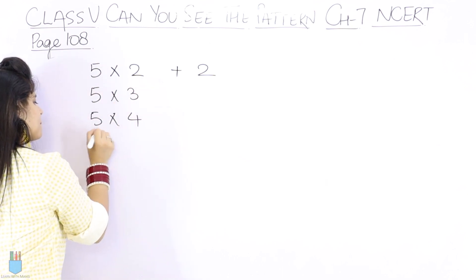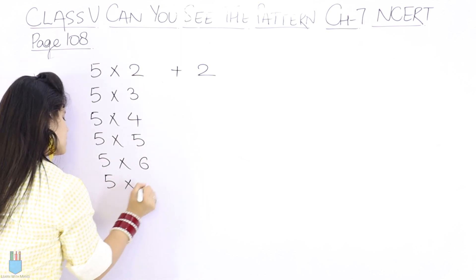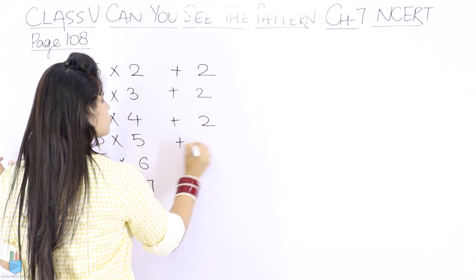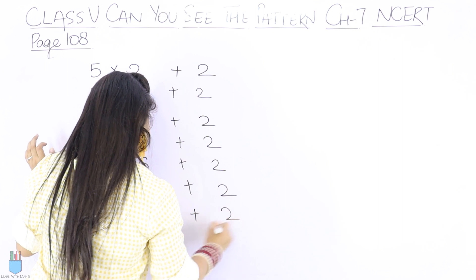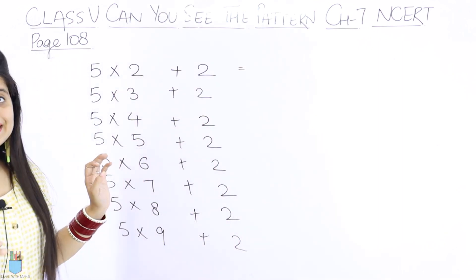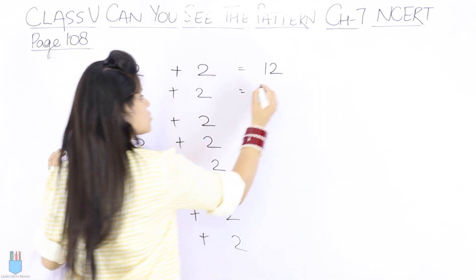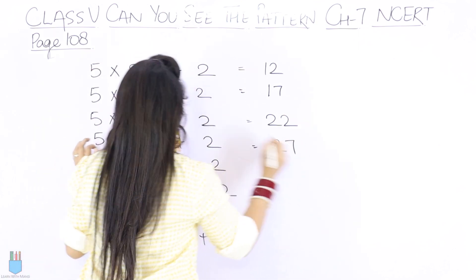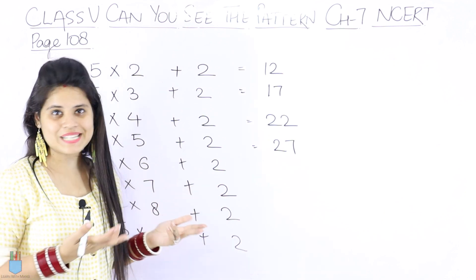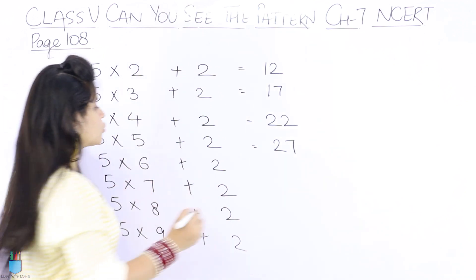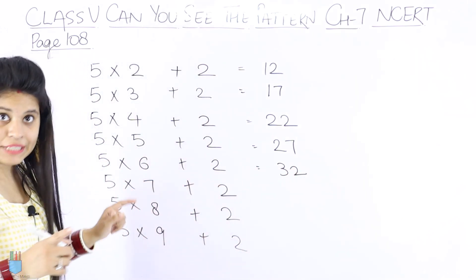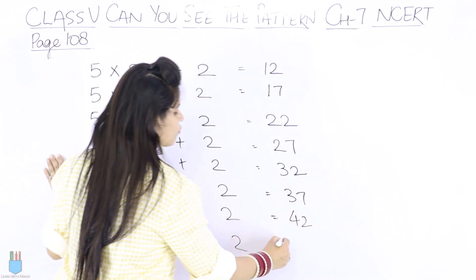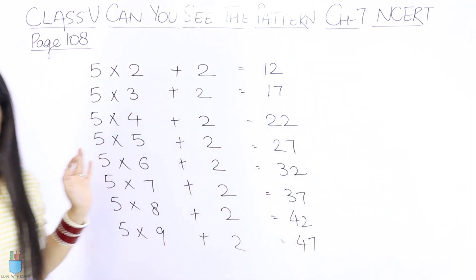Now we have to take 5 table, so we will start 5 into 2, and let's suppose plus 2. 5 into 3, 5 into 4, 5 into 5, 5 into 6, 5 into 7, and every step we will add 2. So let's write: 5 into 2 is 10 plus 2 is 12. 5 into 3 is 15 plus 2 is 17. 5 into 4 is 20 plus 2, 22. 5 into 5 is 25 plus 2, 27. 5 into 6 is 30 plus 2, 32. Then 5 into 7 is 35 plus 2, 37. Then 5 into 8 is 40 plus 2, 42. Then 5 into 9 is 45 plus 2, 47. Done.